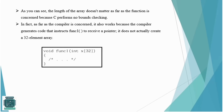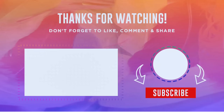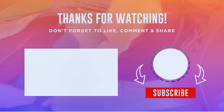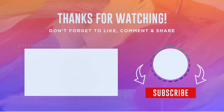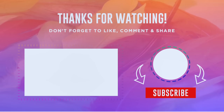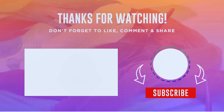The length of the array does not matter as far as the function is concerned because C performs no bounds checking. The compiler generates code that tells the function to receive a pointer — it does not actually create a 32-element array. Here is a programming example: 'void function_one(int x[32])'. I hope you understood the concepts in part one. If you liked this video, please like and subscribe to the Explore Electronics YouTube channel, share with your friends, and stay tuned for upcoming videos. Keep coding, keep learning — see you in the next video!